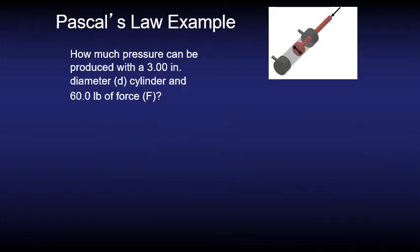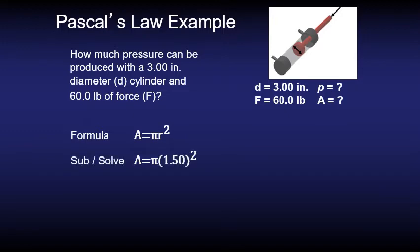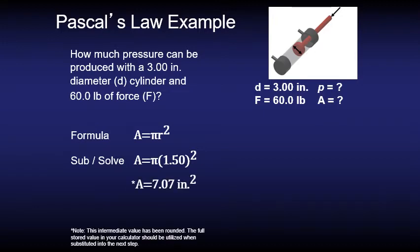Here's an example of how we might use Pascal's law. The question here is how much pressure can be produced with a 3 inch diameter cylinder and 60 pounds of force? Let's start by figuring out the formula. Always remember to double check that you're using radius where you should use radius. In this case we have the radius of 1.5 and so when we plug that into the formula we get an area of 7.07 inches squared.